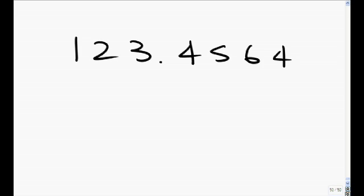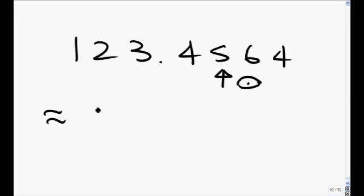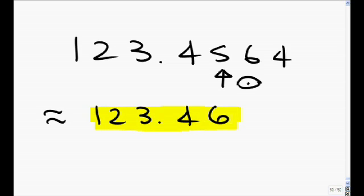If we want to approximate this number to the nearest hundredths position, we look to the digit to the right of the decimal that's in the hundredths position. The four is in the tenths, and the five is in the hundredths. If we look at the digit to the right of the five — recall that if it's a zero, one, two, three, or four, we leave the five alone. In this case, it's a six. If the digit to the right of the hundredths position is a five, six, seven, eight, or nine, we add one to the five and make it a six. This number, 123.46, is approximated to the nearest hundredths position.